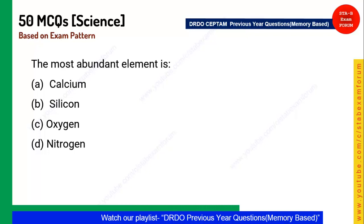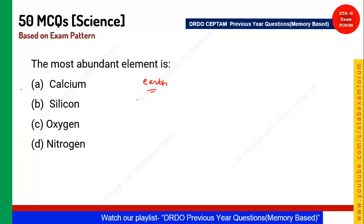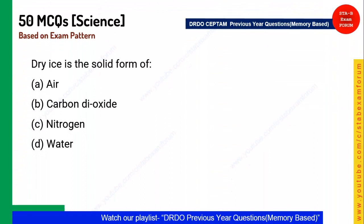Next question: What is the most abundant element? When the question doesn't specify whether it's on Earth or in the universe, always consider it with reference to Earth. Since Earth has mostly water, oxygen is the correct answer — not nitrogen.